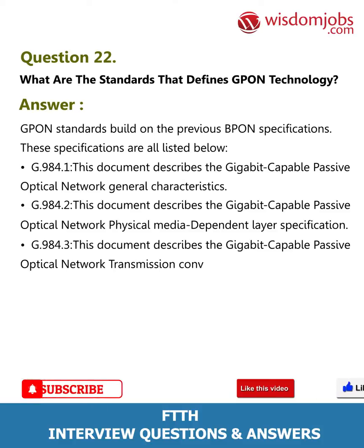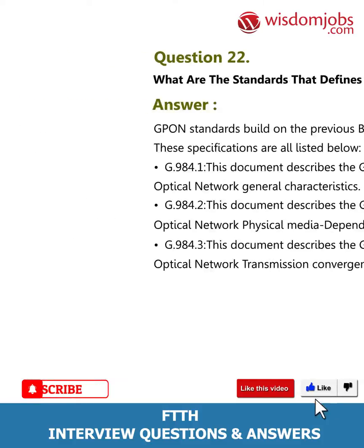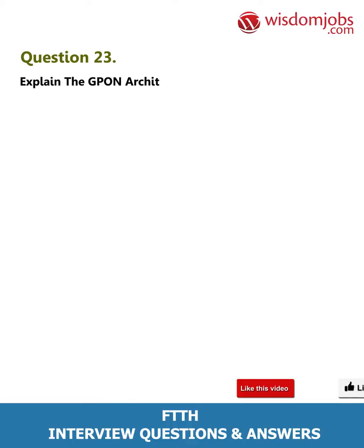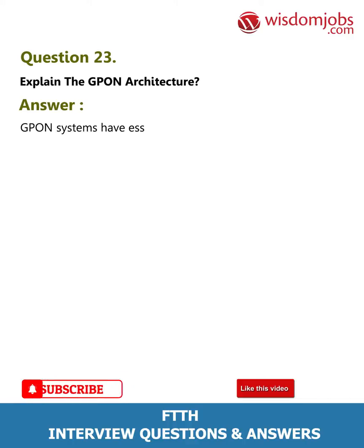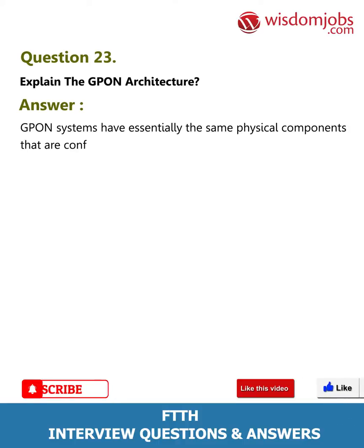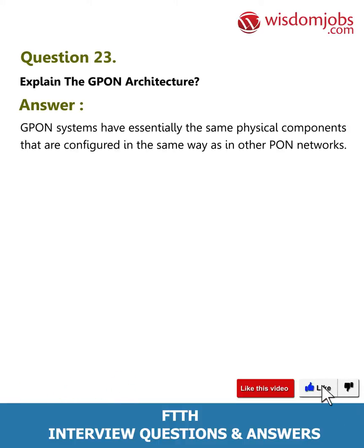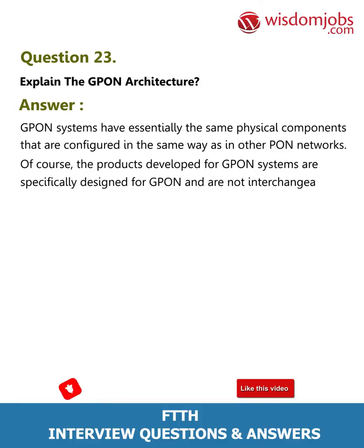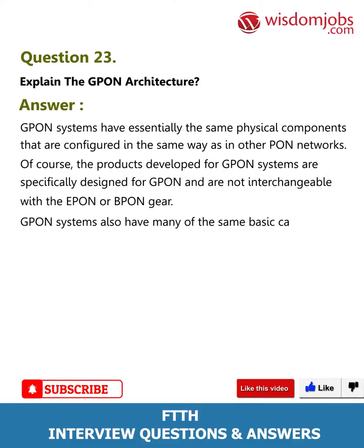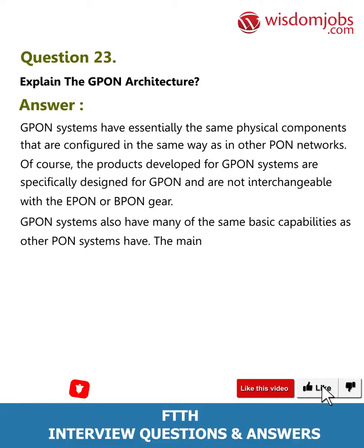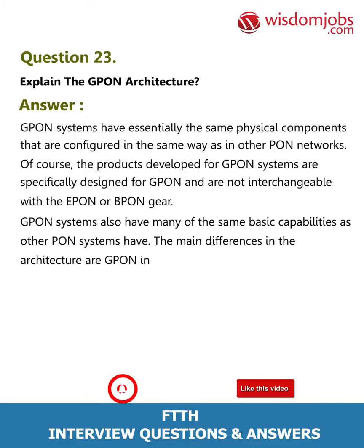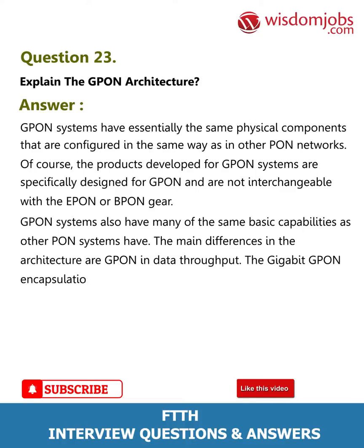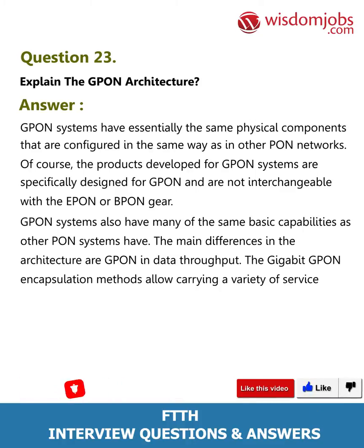Question 23: Explain the GPON architecture. Answer: GPON systems have essentially the same physical components configured in the same way as other PON networks. Products developed for GPON are specifically designed for GPON and are not interchangeable with EPON or BPON gear. GPON systems also have many of the same basic capabilities as other PON systems. The main difference is GPON data throughput — the gigabit GPON encapsulation methods allow carrying a variety of services including ATM, TDM voice, and Ethernet.